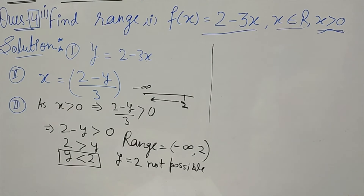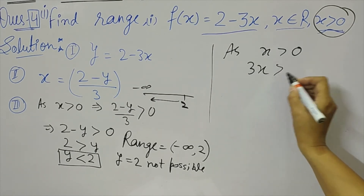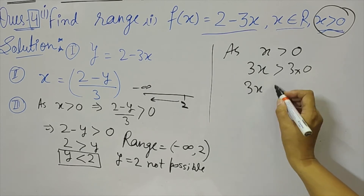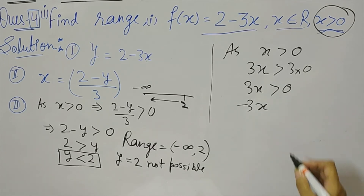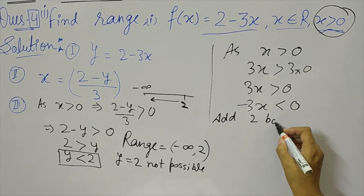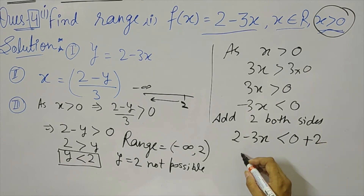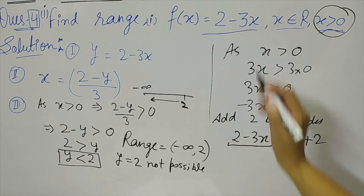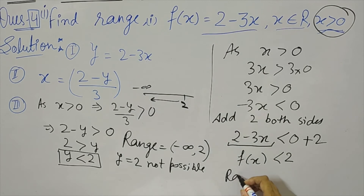For simple questions like this, we can also find the range directly. Starting from the condition x > 0: multiply both sides by 3 to get 3x > 0, then change signs so −3x < 0, then add 2 to both sides: 2 − 3x < 2. Since f(x) = 2 − 3x, we get f(x) < 2, so the range is (−∞, 2) — the same result.